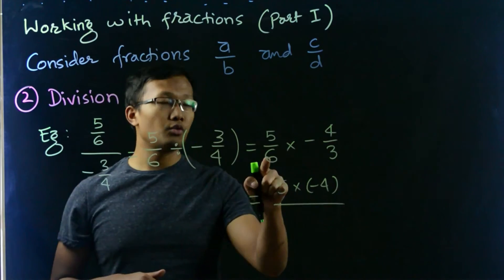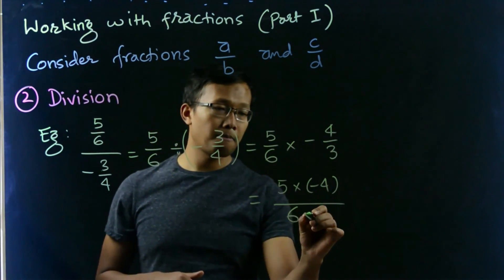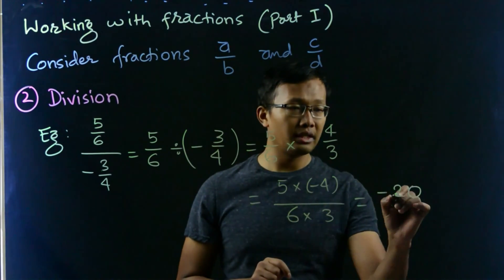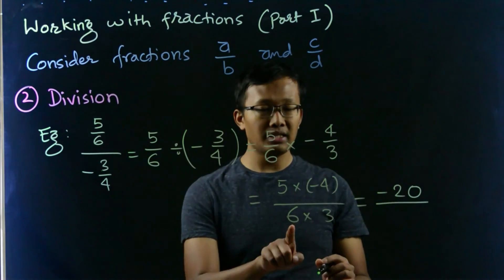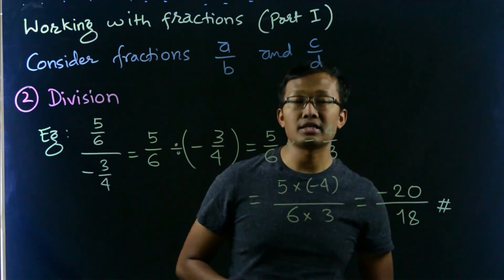In the denominator, we can multiply 6 and 3. Which is negative 20, negative 20 divided by 6 times 3 is 18. That's our division rule. Thank you.